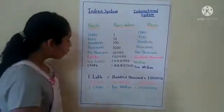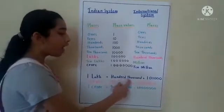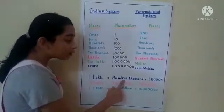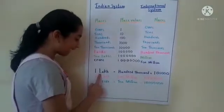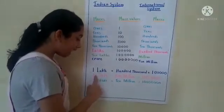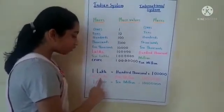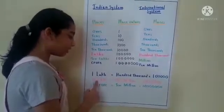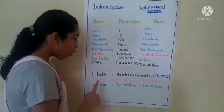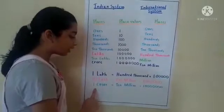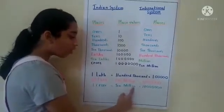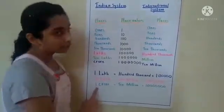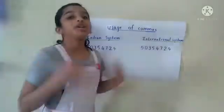So, 1 Lakh is equal to 100,000. 10 Lakh is equal to 1 Million, or 1 Million is equal to 10 Lakh. 1 Crore is equal to 10 Million, or 10 Million is equal to 1 Crore.